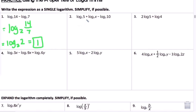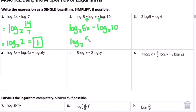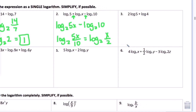Number 2 has addition and subtraction. Going left to right, the addition uses the product rule: log base 2 of 5x minus log base 2 of 10. Then the subtraction uses the quotient rule: log base 2 of (5x divided by 10), which simplifies to log base 2 of (x over 2).